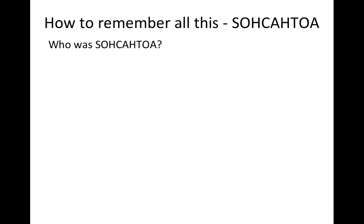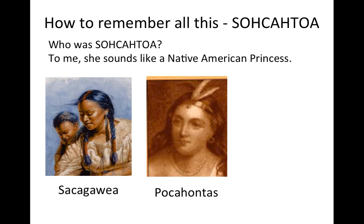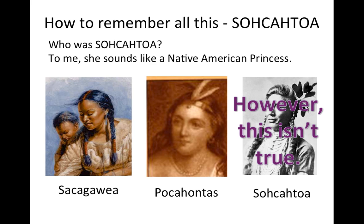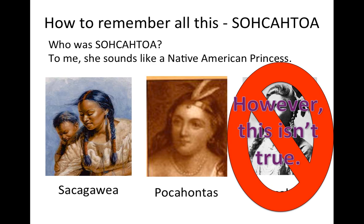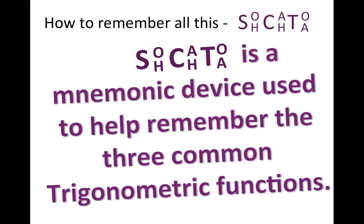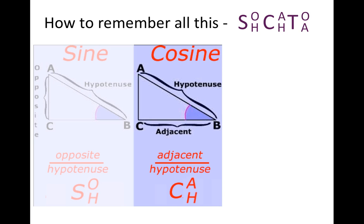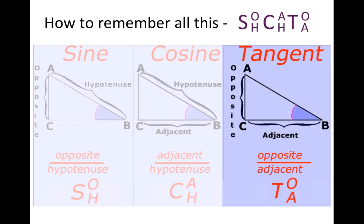Now how are we going to remember all this? Well, who was SOHCAHTOA? To me, she sounds like a Native American princess — we have Sacagawea, we have Pocahontas, and SOHCAHTOA. Unfortunately, I just made all that up. SOHCAHTOA is a mnemonic device to help us remember the three common trigonometric functions. Sine is opposite over hypotenuse — SOH. Cosine is adjacent over hypotenuse — CAH. Tangent is opposite over adjacent — TOA. Put it all together and we have SOHCAHTOA.